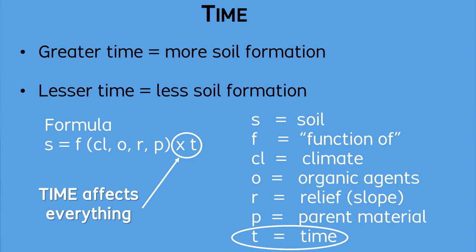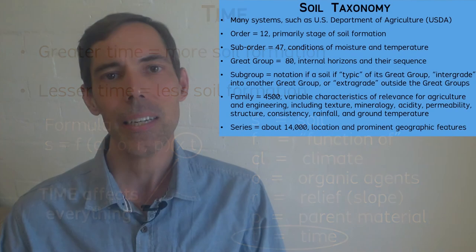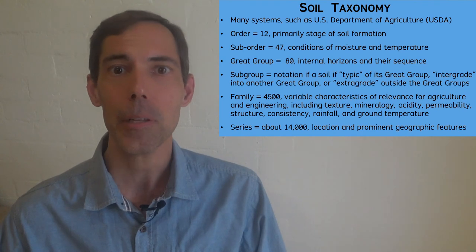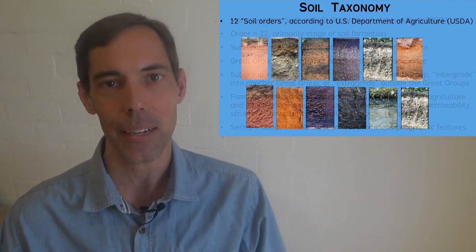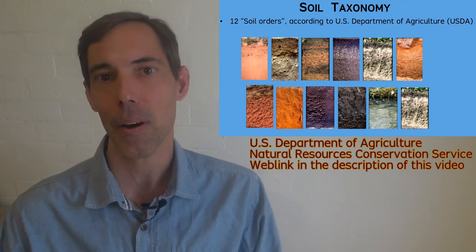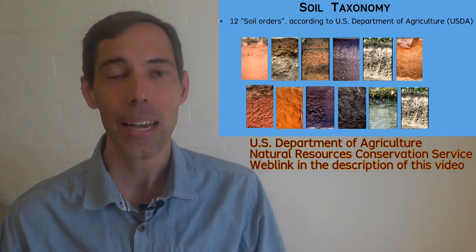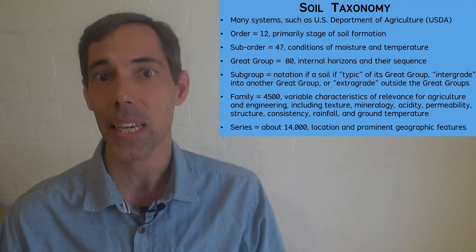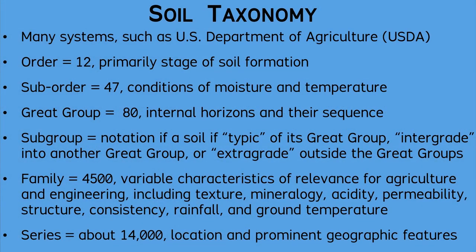When considering how to classify soils with their diverse variables, several approaches have used different criteria. Among those approaches, the system of the U.S. Department of Agriculture has been influential and effective, using a taxonomy that accommodates most standards. This taxonomy describes 12 soil orders, with further subdivisions eventually resulting in more than 14,000 soil series.